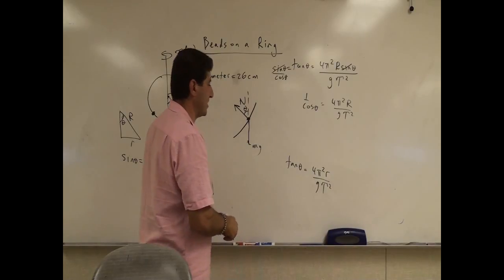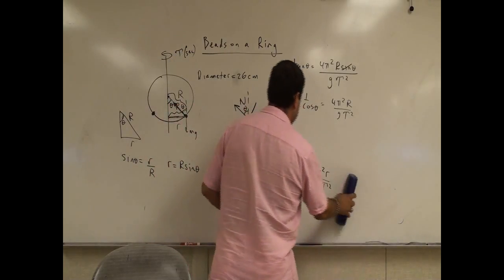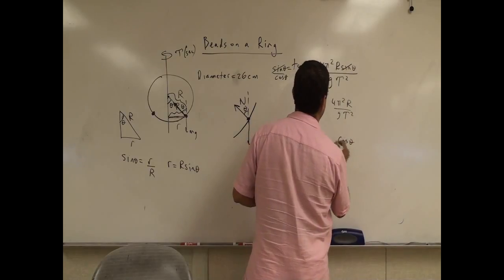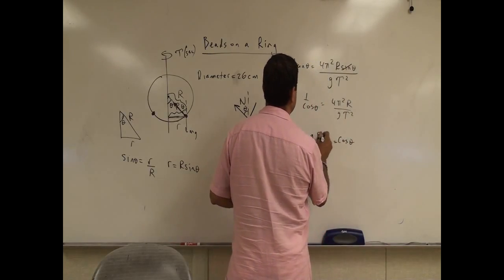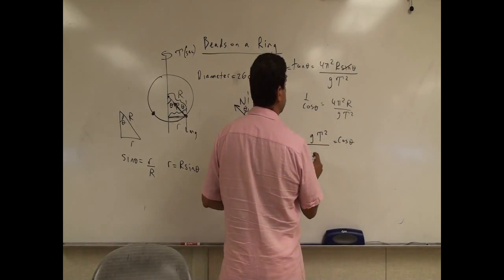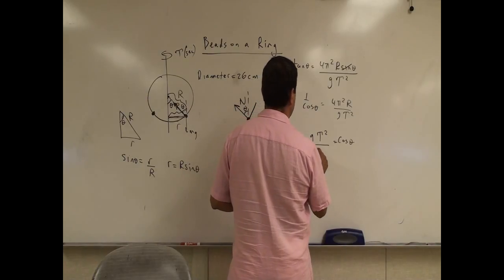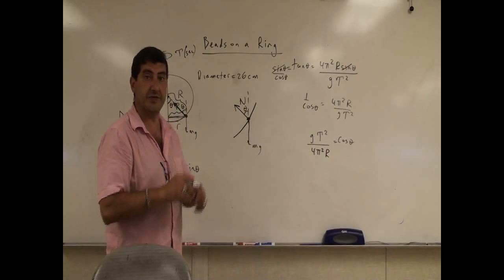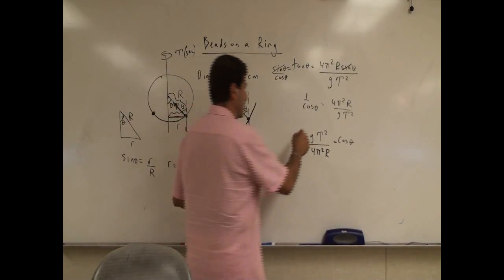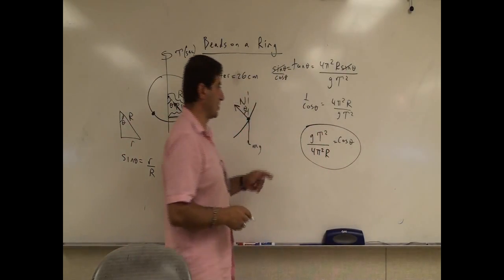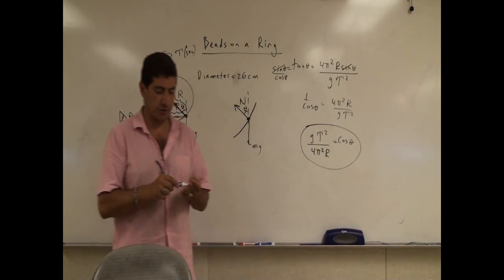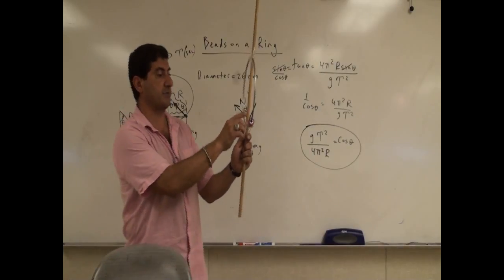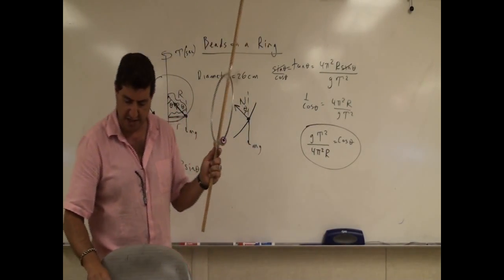And then we can get, so we have 1 over cosine theta is equal to 4 pi squared r over the gt squared. Then I can cross multiply everything and come up for an expression for cosine theta. So we have here cosine theta is equal to g times the period squared divided by 4 pi squared r, where r is the actual radius of the ring that we are using. So in my case, of course, the theta will depend on the period.